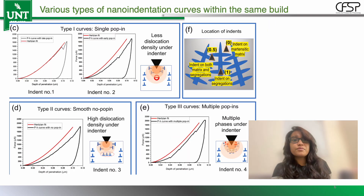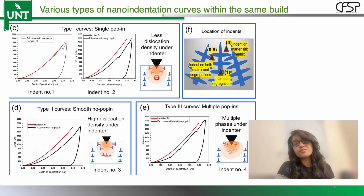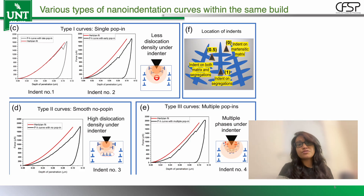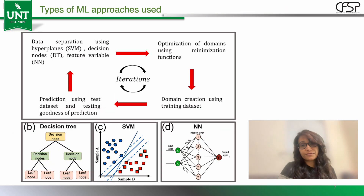When we zoomed into the nanoscale, individual indentation curves show distinct behavior. Some of these curves are smooth while others display pop-ins — the little jumps you can see in each of these graphs — which indicate dislocation avalanches and local structural rearrangement. These pop-ins became the key to linking the mechanical responses to the microstructure.